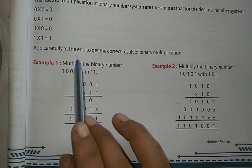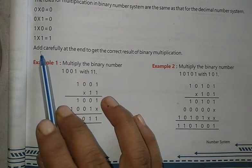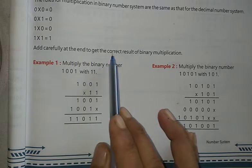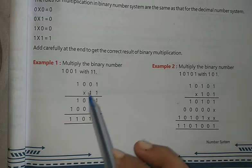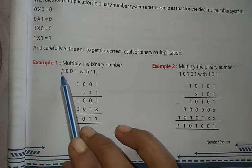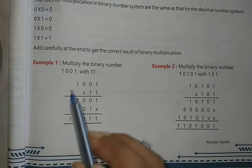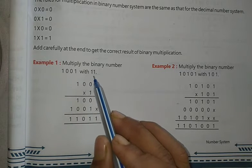Add carefully at the end to get the correct result. Example number one: multiply the binary number 1001 with 11.